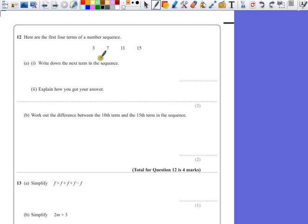Let's see if we can see what the pattern is. 3 up to 4 is 7. 7 add 4 is 11. 11 add 4 is 15. So what we're doing is going up in 4s each time. So if I added 4 on this it would be 19.